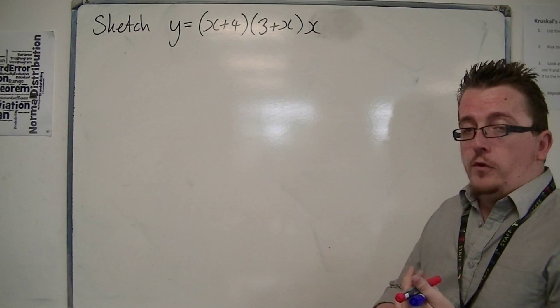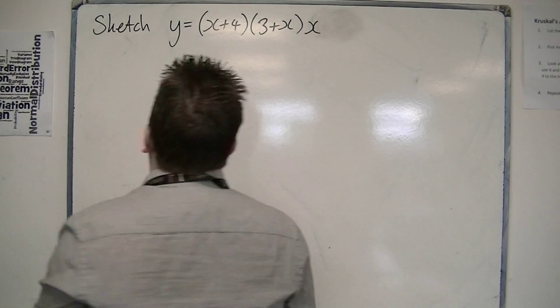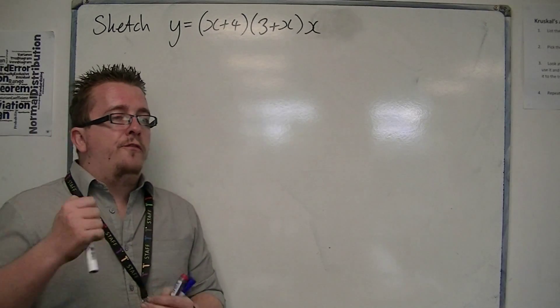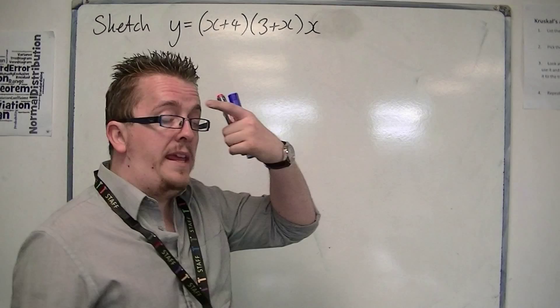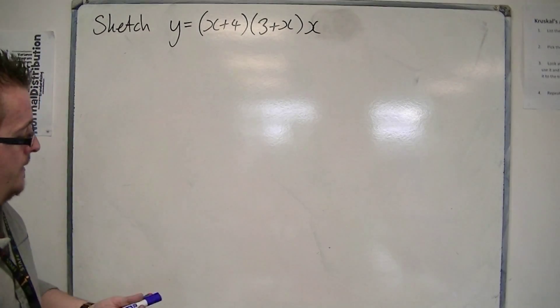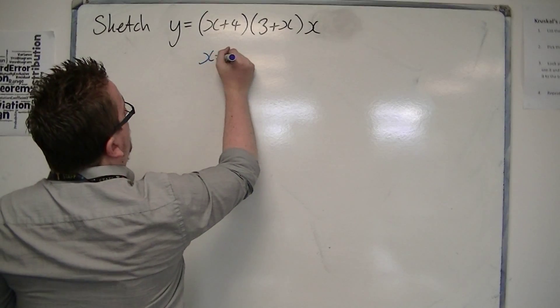So first of all in this, look for the values that will make this whole right-hand side equal to 0. And those values are, from this bracket, x is minus 4.